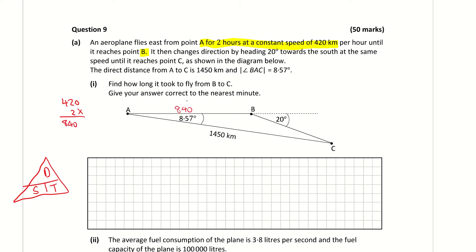I'll mark that onto my diagram: it's 840 km from A to B. The angle at B must add up to 180 degrees because it's a straight line angle, so the internal angle is 160 degrees, since 180 minus 20 is 160 degrees. That means I can fill in the third remaining angle in the triangle, which is 180 degrees minus 8.57 plus 160 degrees, giving an angle of 11.43 degrees.